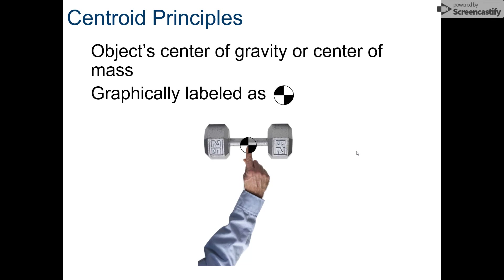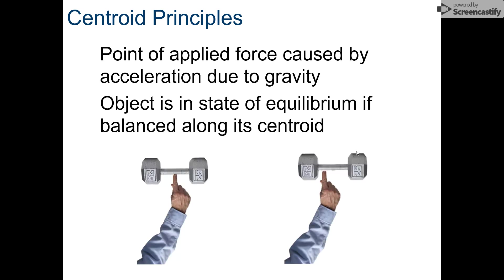It's also an area where your object would be balanced. This very strong man is balancing 25 pounds with one finger because he has put his finger at the centroid. If we put our finger not at the centroid, the weight rocks back and forth and will not balance. At this balancing point, it is considered in a state of equilibrium, which means everything is balanced and all forces acting upon it are canceling each other out.